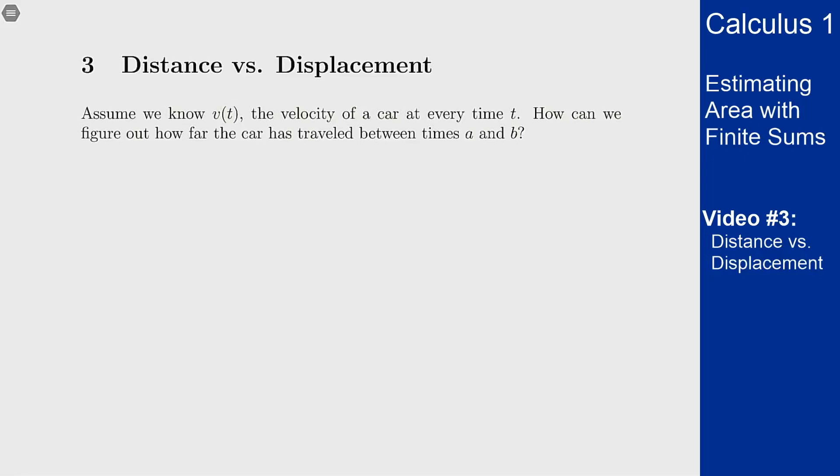In this video we'll talk about distance versus displacement as an application of finding areas under curves. Assuming you know the velocity of a car at every time t, you want to figure out how far the car has traveled between times a and b.